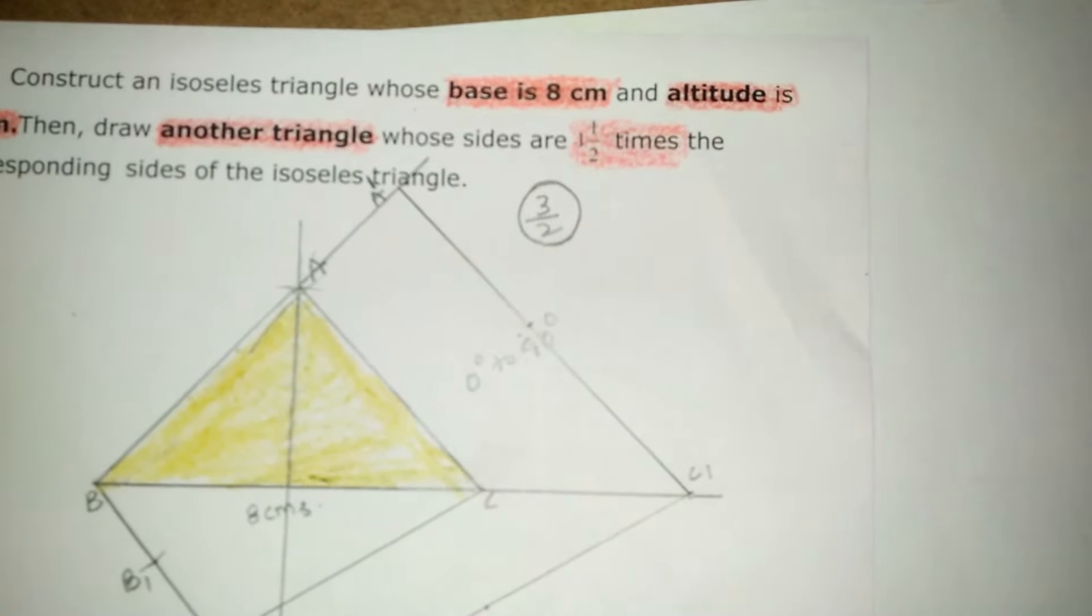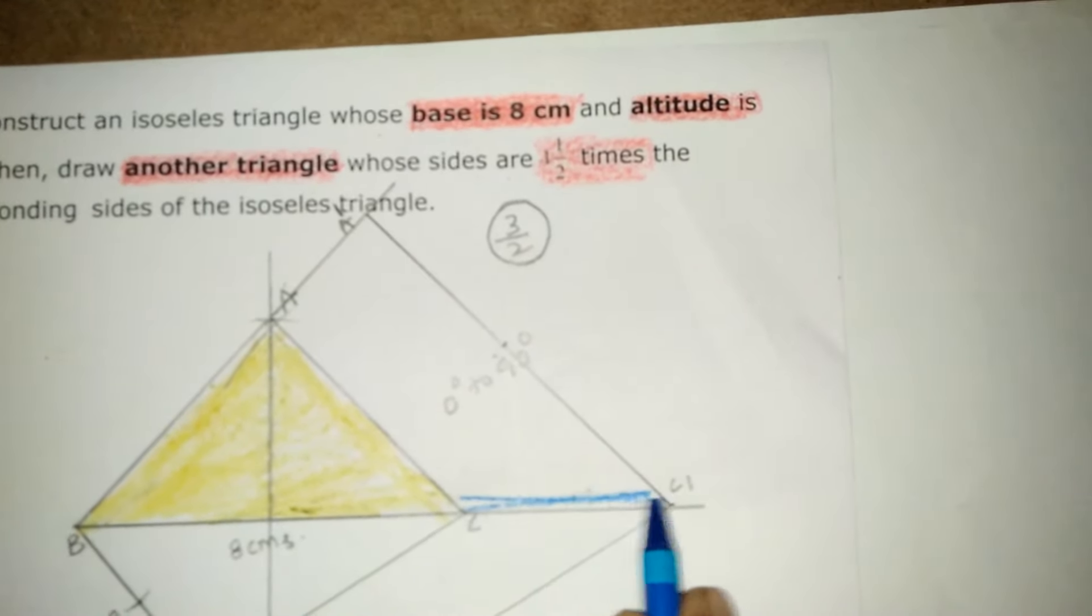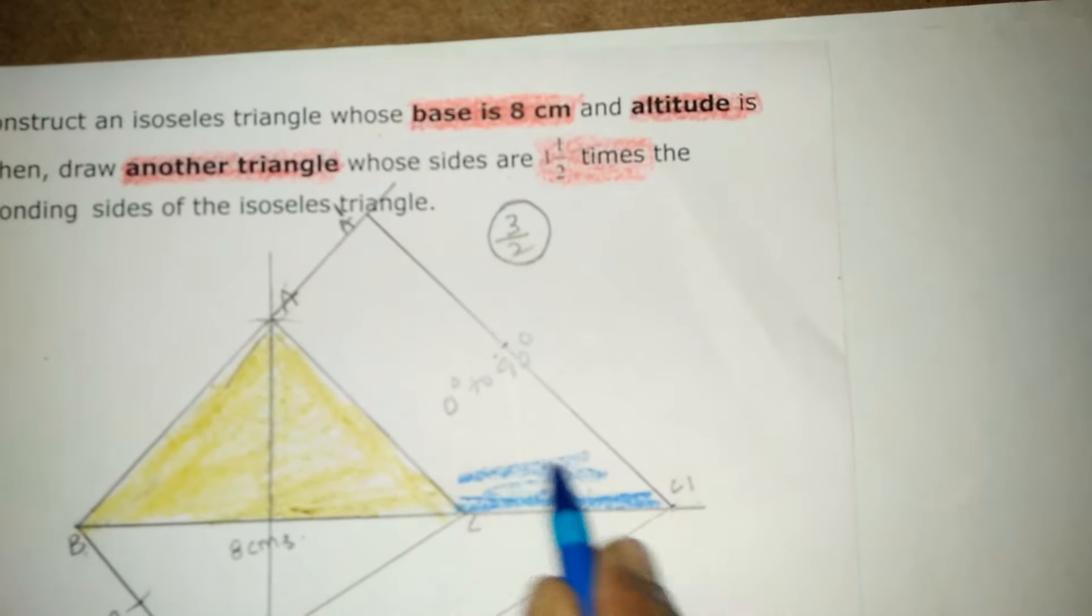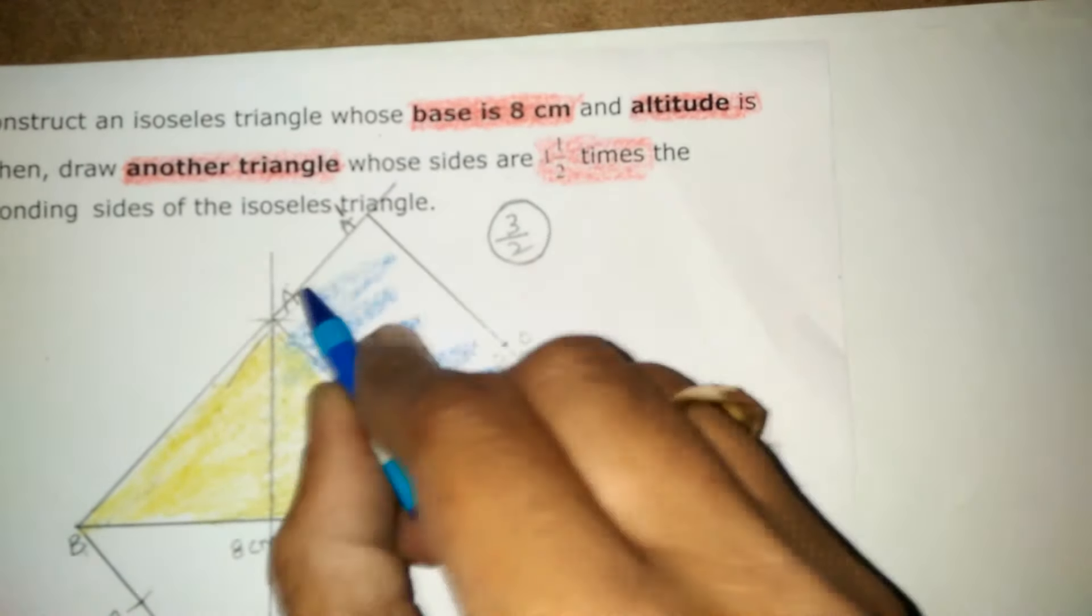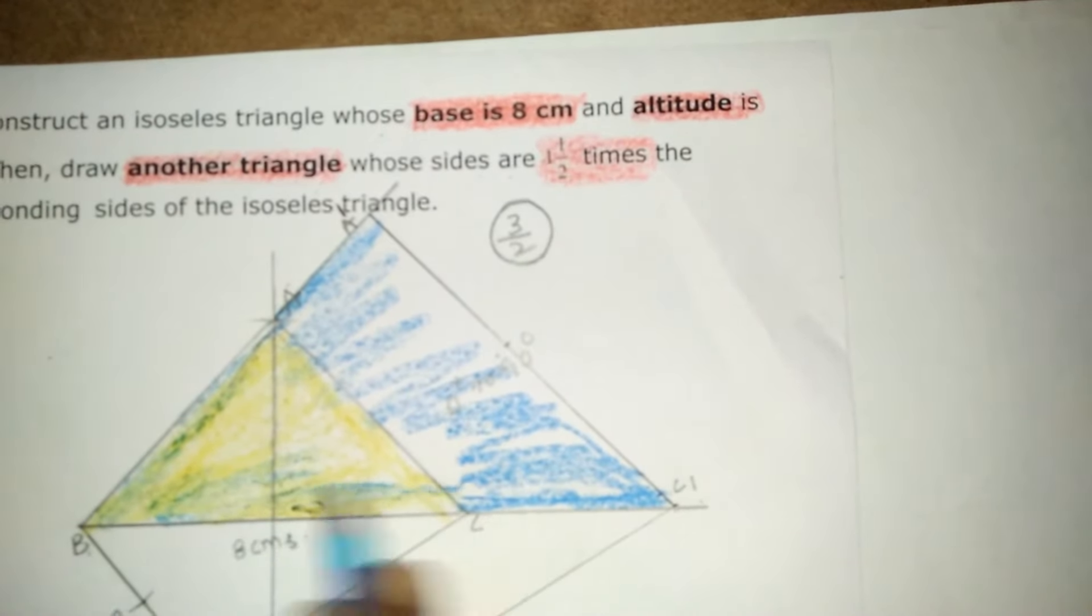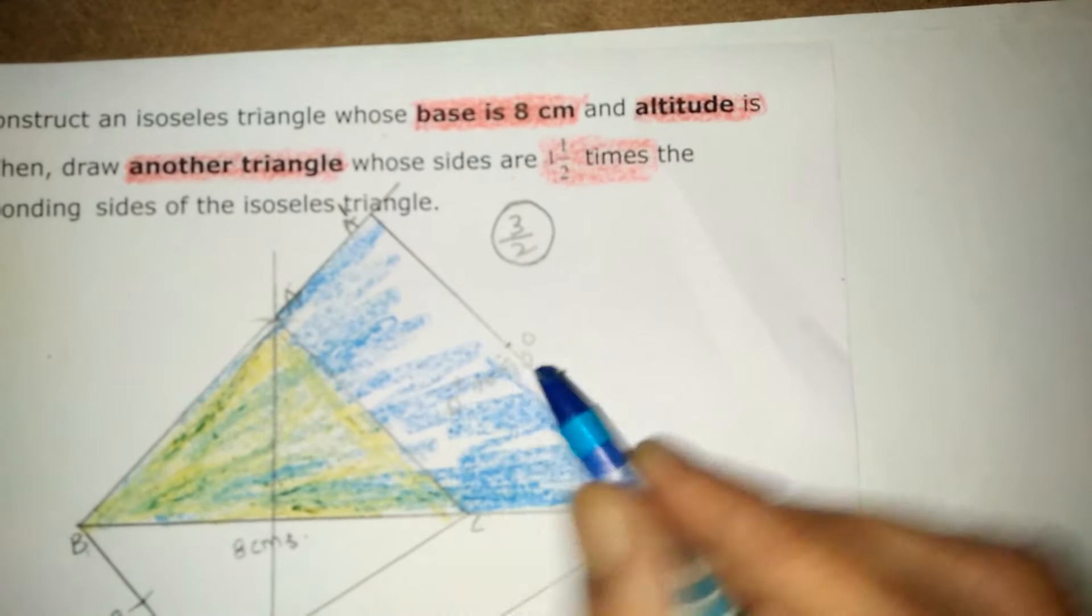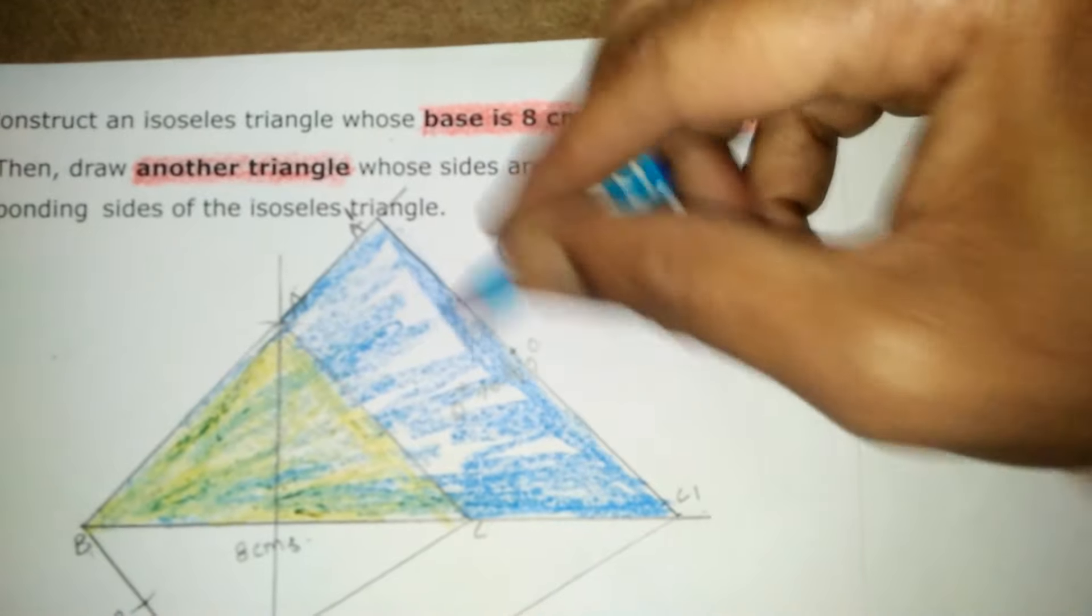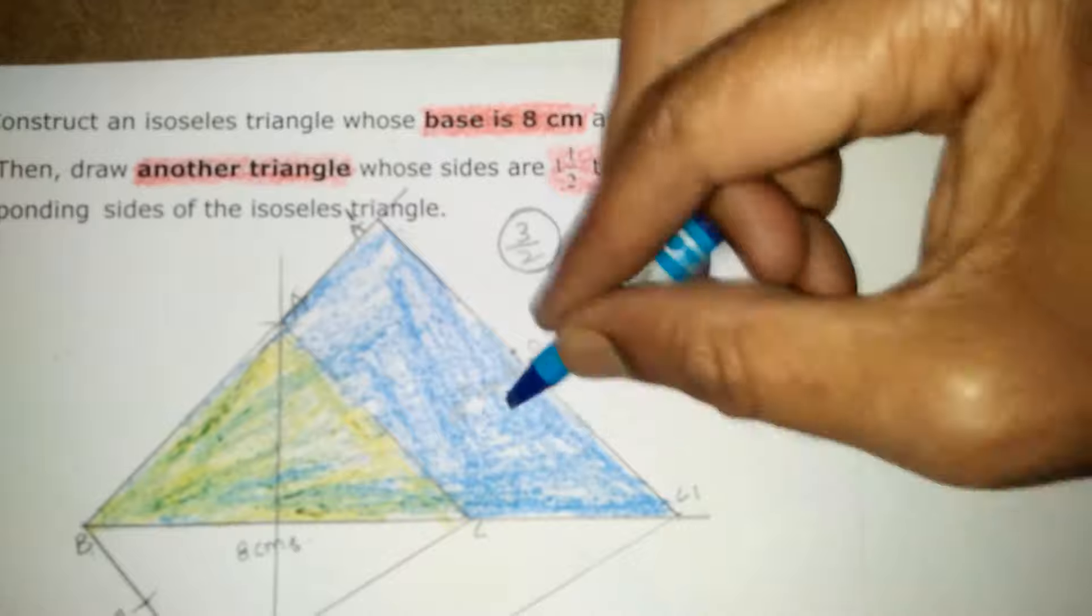So, hence, the required triangle is A1, B and C1.